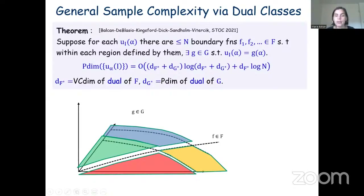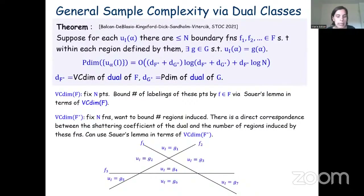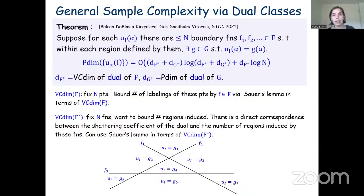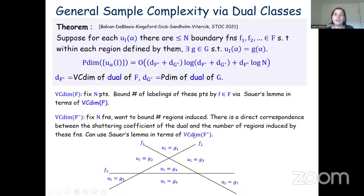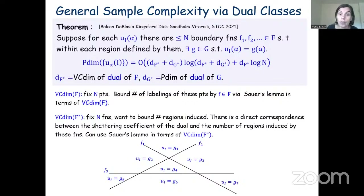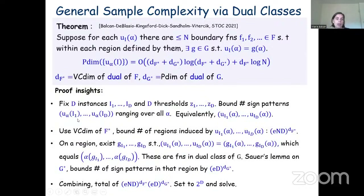If the dual functions are piecewise structured in this sense, we can bound the pseudo-dimension of the primal class as a function of how complex the boundary functions are and how complex the functions in class G are inside each piece. Specifically, the pseudo-dimension of the primal class is upper-bounded by (d_F* + d_G*) · log(d_F* + d_G*) + d_F* · log(n), where d_F* is the VC dimension of the dual of the boundary function class F, d_G* is the pseudo-dimension of the dual of G, and n is an upper bound on the number of boundary functions.